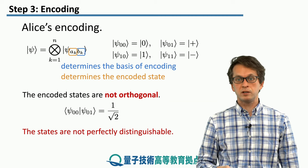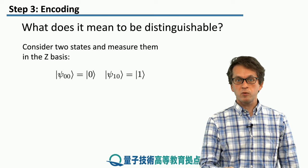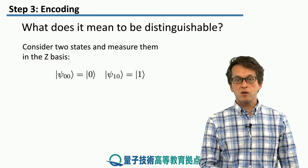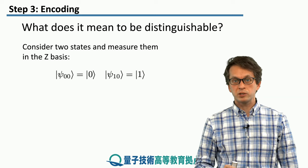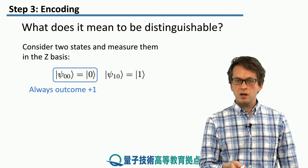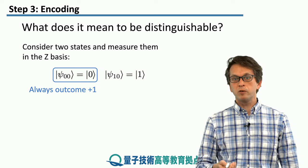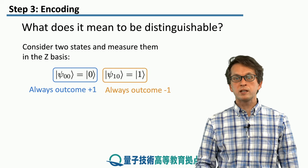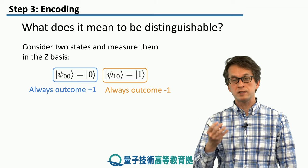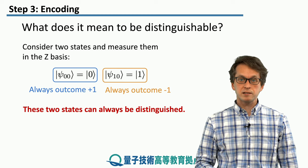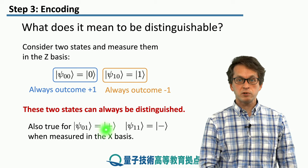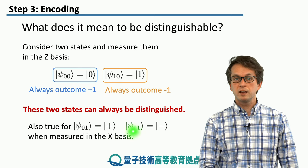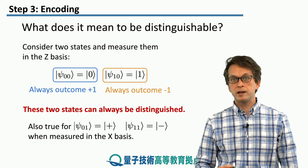So what does it mean for two states to be non-distinguishable? Consider measuring in the Z basis with states |0⟩ and |1⟩ — they are orthogonal, so we can perfectly distinguish them: |0⟩ always gives +1, and |1⟩ always gives −1. The same applies in the X basis with states |+⟩ and |−⟩: measuring in X always gives +1 for |+⟩ and −1 for |−⟩, so we can distinguish them with certainty.